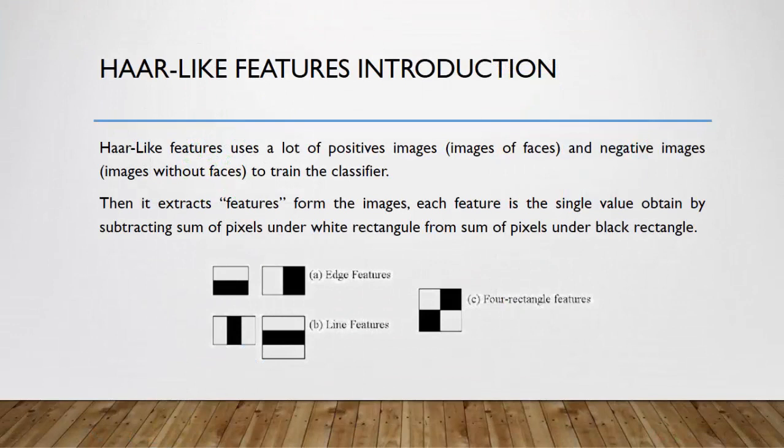Now we will talk about the Haar-like features introduction. Haar-like features use a lot of positive images, images of faces in that case, and negative images, images without faces, to try and declassify. Then it extracts features from the image. Each feature is a single value obtained by subtracting sum of pixels under white rectangle from sum of pixels under black rectangle. So here we have these three examples. For example, the edge feature, the line feature, and four rectangle feature.